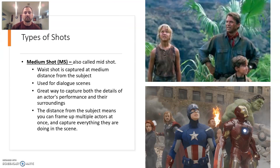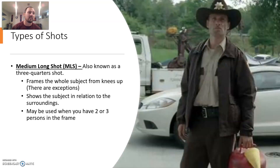And then we have a medium shot — I used Jurassic Park and The Avengers. It's great for dialogue scenes and a great way to capture both the details of the actor's performance and their surroundings. For the last type, a medium long shot, also known as a three-quarter shot, it frames the whole subject from the knees up. Here's Rick Grimes from The Walking Dead as an example.